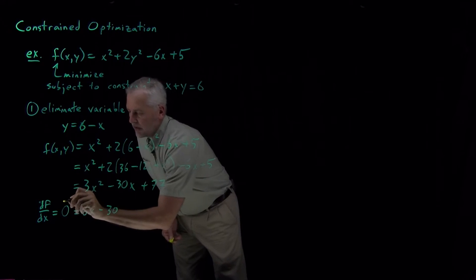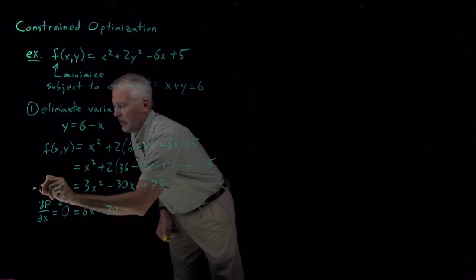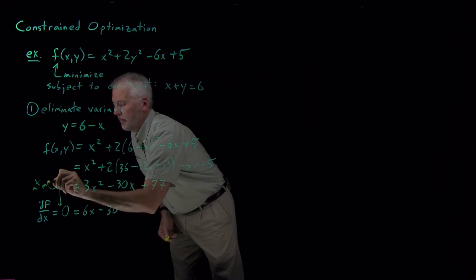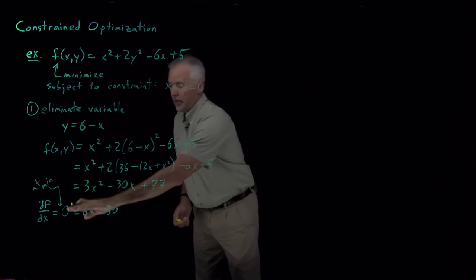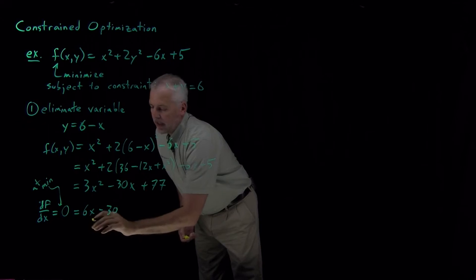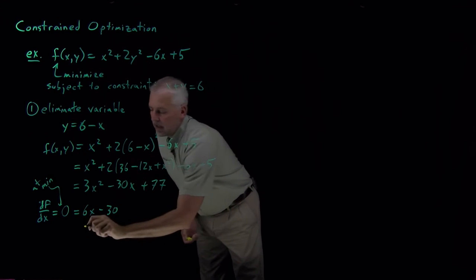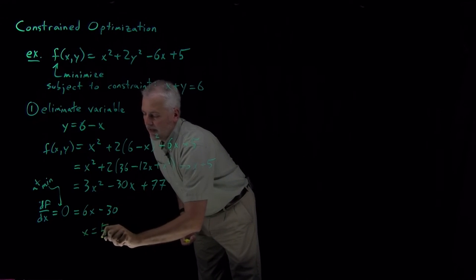So this is only true at the minimum. Certainly 6x - 30 is not always equal to 0, but at the minimum, that's true. If I rearrange that equation, 6x = 30, or x = 5.